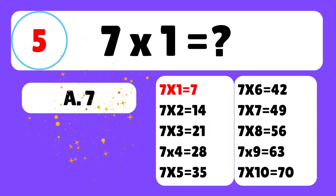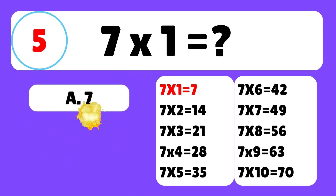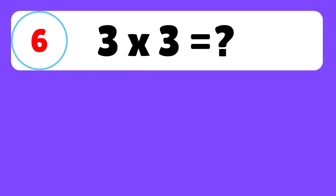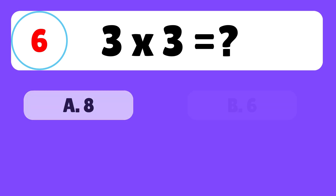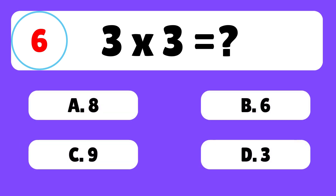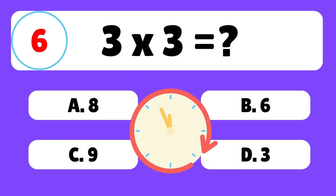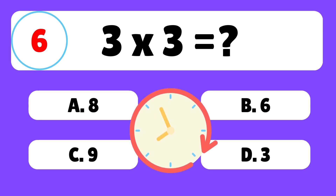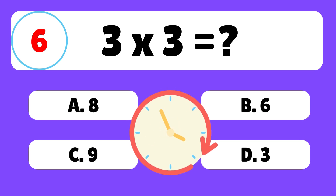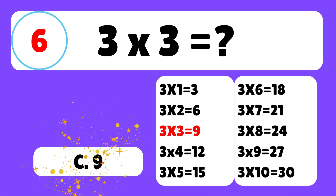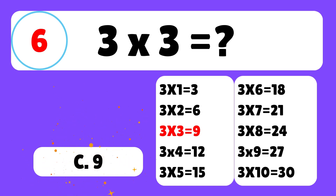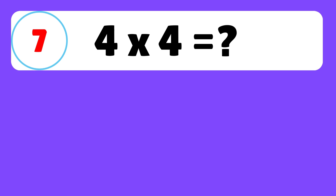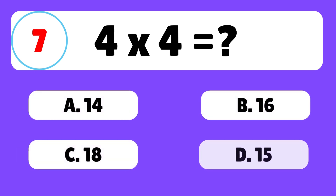Question five: what is seven times one? The answer is that seven times one is equal to seven. Question six: what is three times three? Three times three is equal to nine. Question seven: what is four times four?